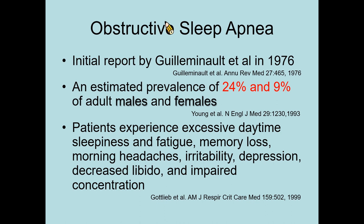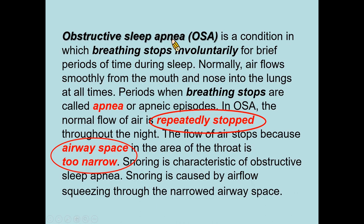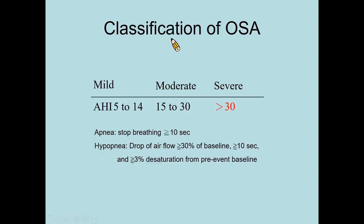Why do patients have so many symptoms? That is because the respiratory events, including apnea and hypopnea, happen repeatedly. The key issue is the narrow airway space and the collapsibility of the soft palate and tongue, which results in obstruction. We are all familiar with the classification of OSA.